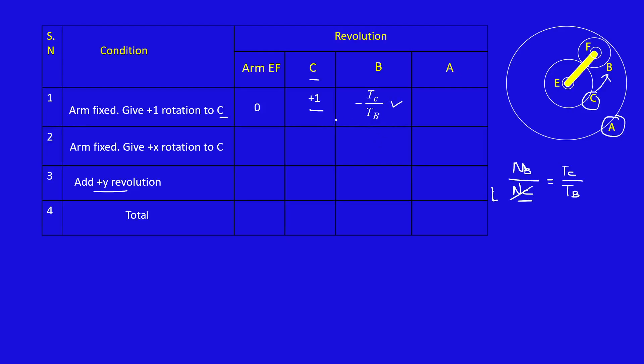Here the connection is C and B. Look at gear C and B. Both are external contact. Which means if C is plus then B is minus. That's why I put minus sign here. So speed of NB equal to minus TC by TB.